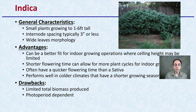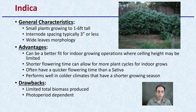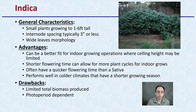The indicas tend to be smaller plants, only about 1 to 6 feet tall, with internode spacing of 3 inches or less, and a wide leaf morphology. The advantage is they can fit indoor growing operations with limited ceiling height. They have a shorter flowering time, allowing for more plant cycles in an indoor grow, and they often perform well in colder climates with shorter growing seasons. However, the drawbacks are that the total biomass produced may be reduced overall. This is another photoperiod-dependent strain.